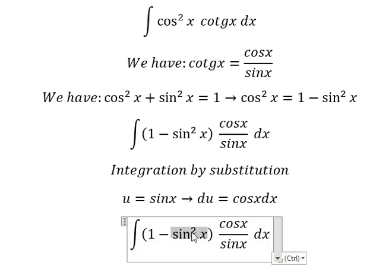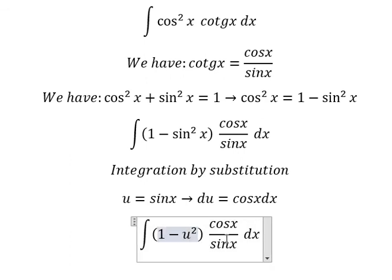Sine squared x, that's u squared. Sine x we change by u. Cosine x dx we change by du.